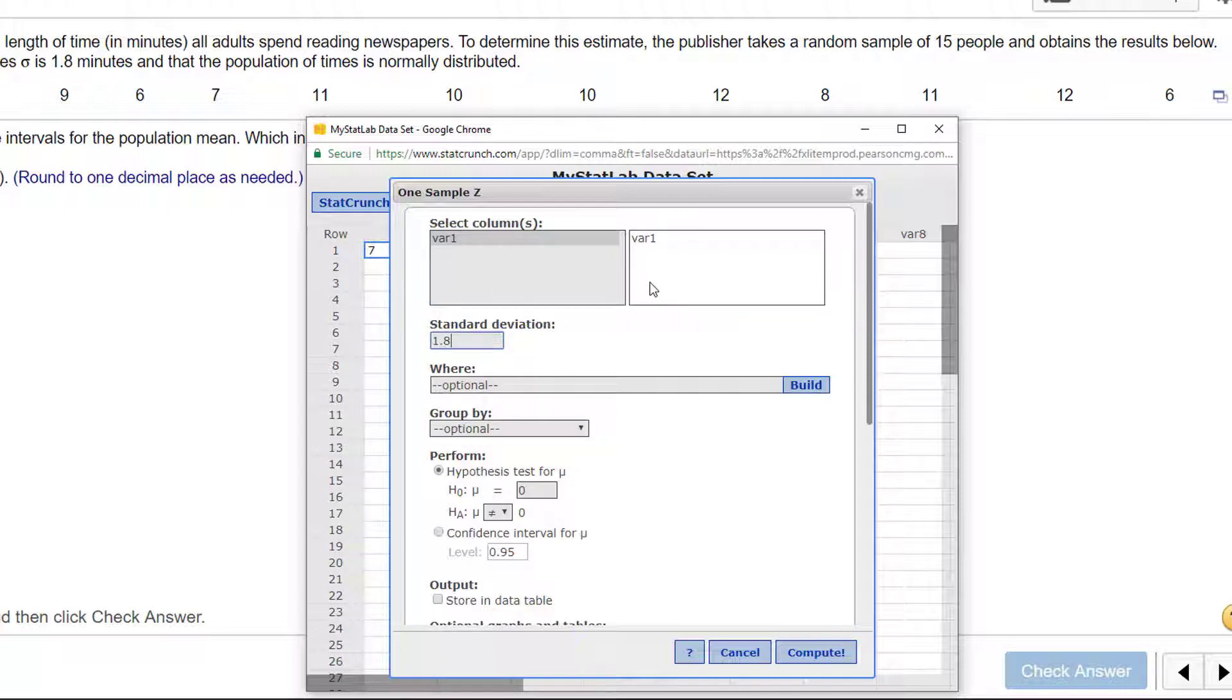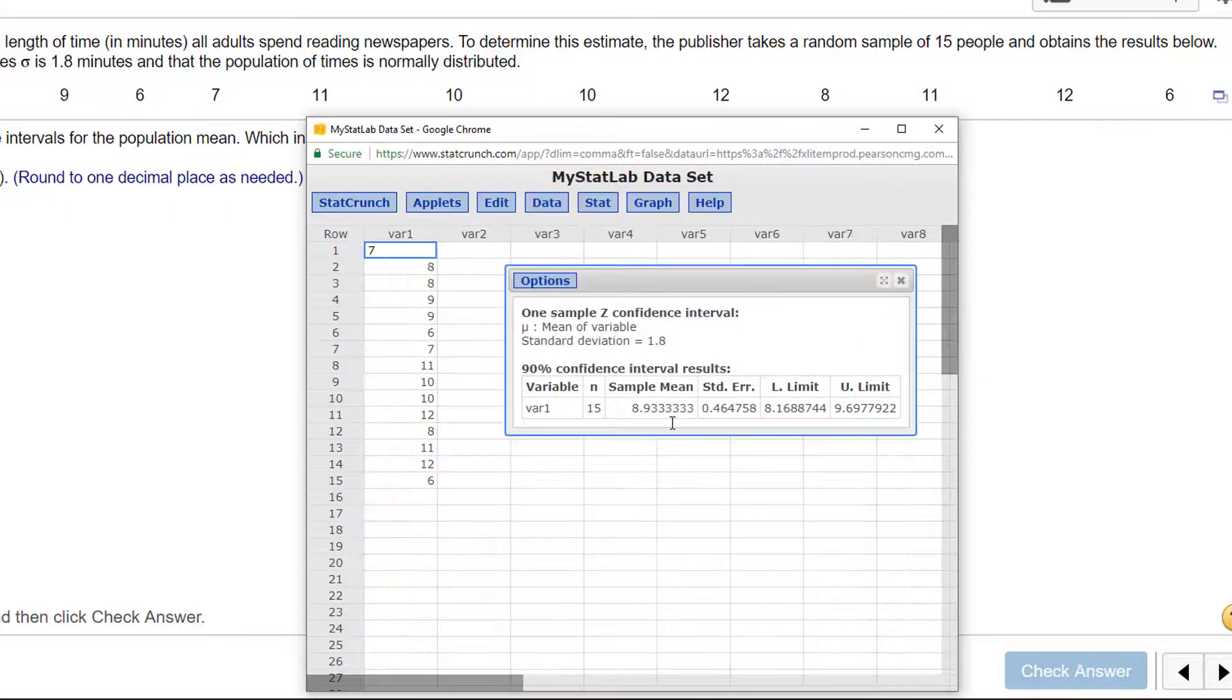Variable one is my column of data. My standard deviation is 1.8 and I want a 90% confidence interval. So hopefully I did everything right.